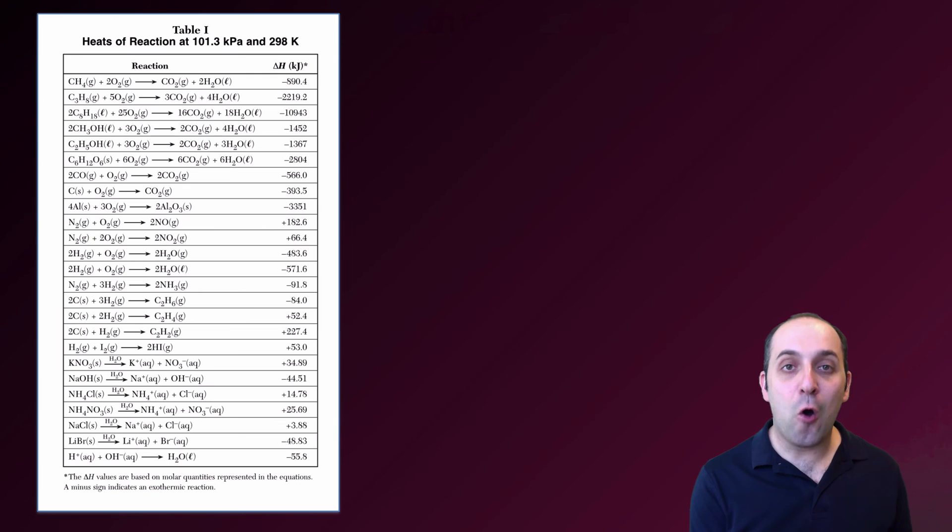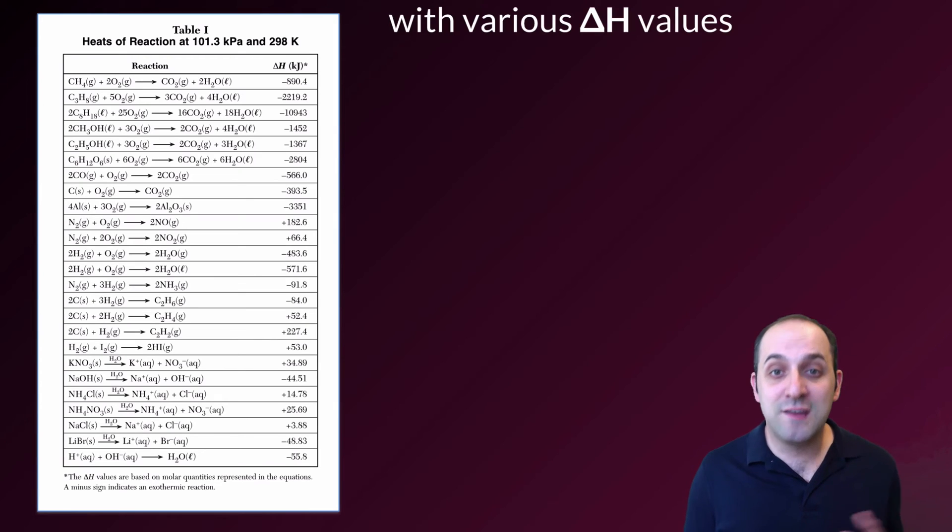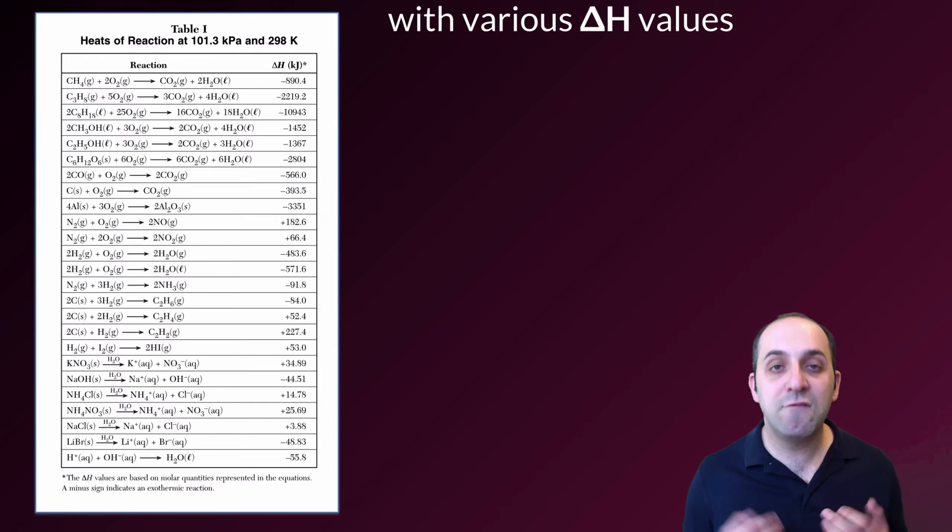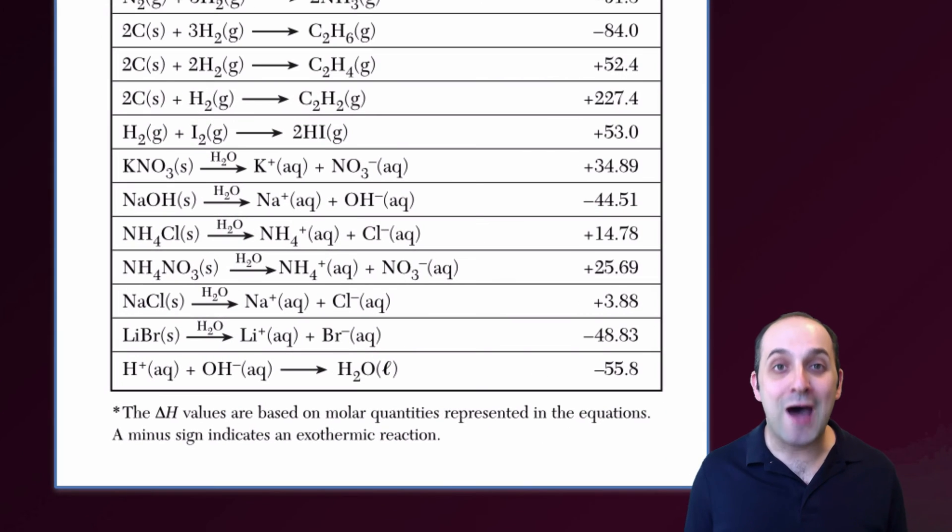Reference table I gives us a whole bunch of chemical and physical processes that we'll investigate during this class. Each one has a different delta H value, and notice that those delta H values are both positive and negative. If you forget that negative delta H's are exothermic and positive is endothermic, you can always go to the bottom of reference table I, where it reminds you that a minus sign indicates an exothermic reaction.